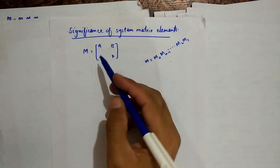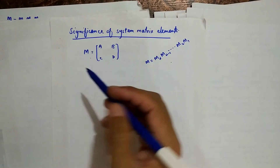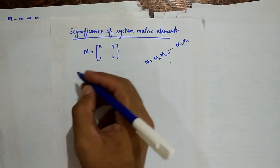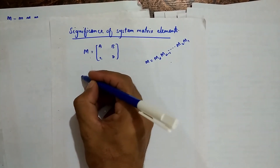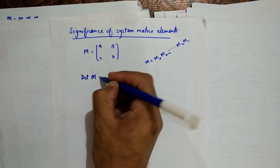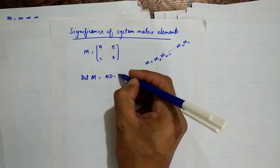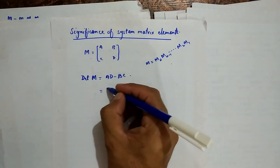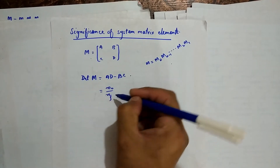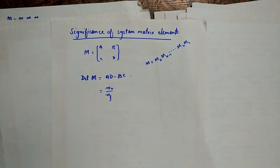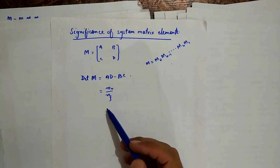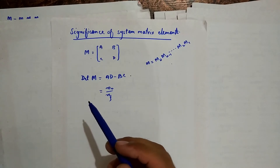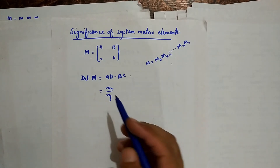The determinant of the system matrix has a very useful property. The determinant, which is AD minus BC, will always give us n₀ divided by nf, where n₀ and nf are the refractive indices of the initial and final media of the optical system.